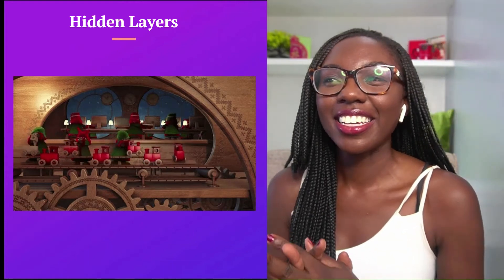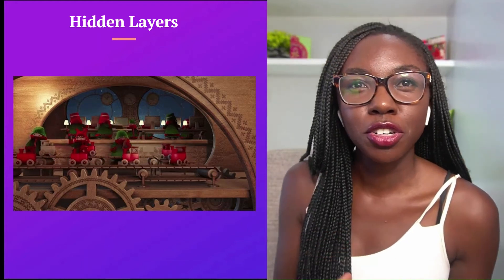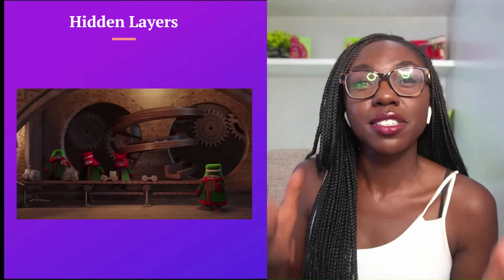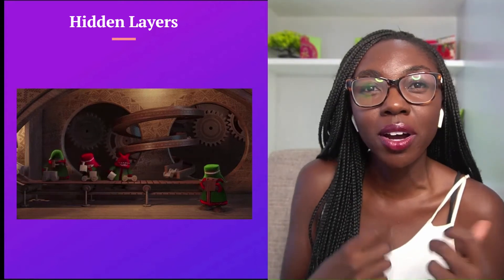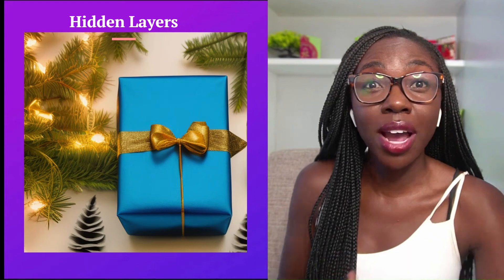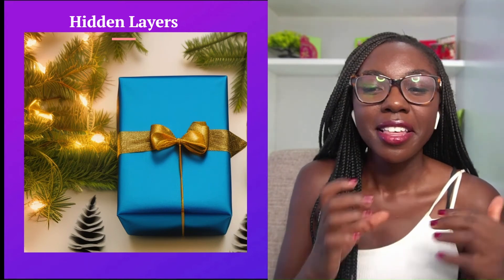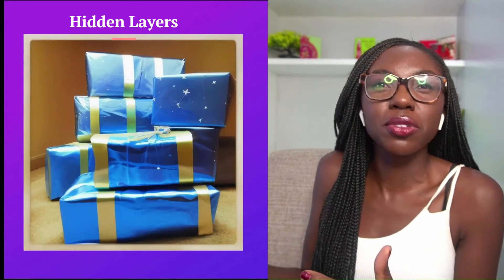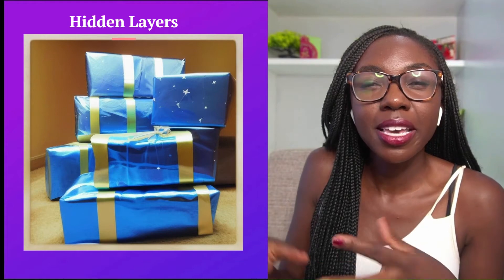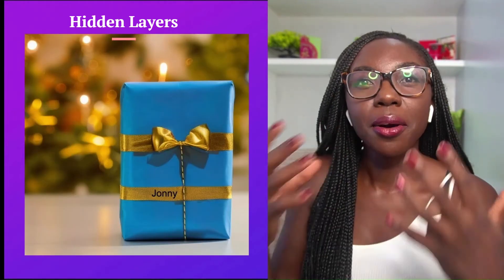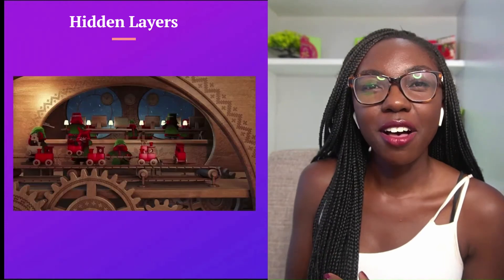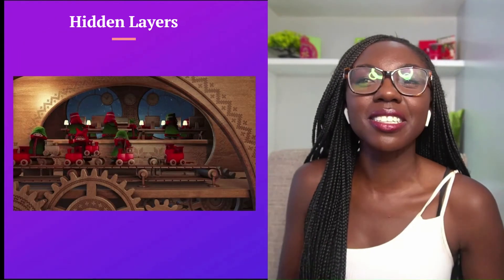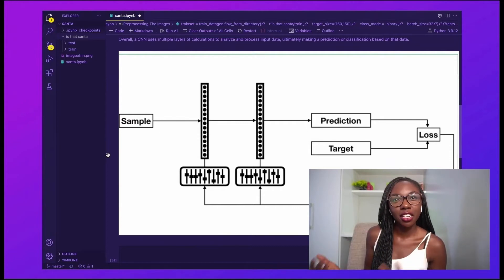When we think of the hidden layers, we can think of them like elves working in Santa's workshop, sorting through presents to determine which ones belong to which child. Each elf has a specific task — like a layer. One elf might examine the present wrappers and sort by color, the next elf might examine the name tags to see whose present it is, and the final elf decides this is Johnny's blue-wrapped present for this specific child. Overall, a CNN uses multiple layers of calculations to analyze input data and make a prediction or classification.